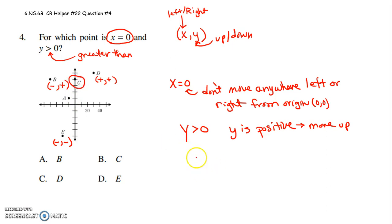So letter C. Letter C has an x equal to 0 and a y value that's greater than 0. Because I didn't move anywhere left or right, I only moved up. So it's letter C. I hope that helps.